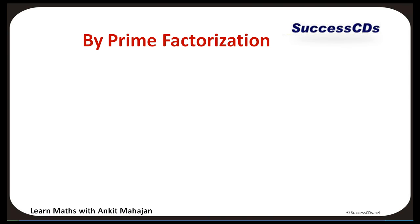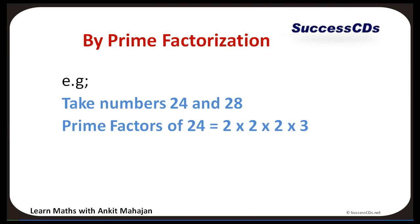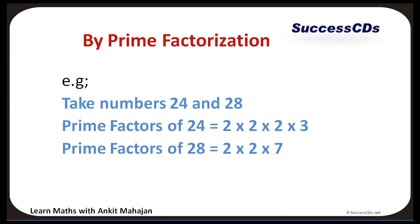Let's take another example with numbers 24 and 28. Prime factors of 24 are 2, 2, 2, and 3. Prime factors of 28 are 2, 2, and 7. We have 2 pairs of number 2 as common factors. Therefore HCF is 2 x 2, which equals 4.